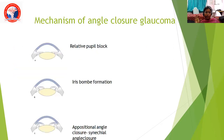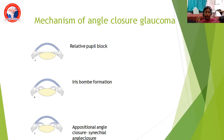This picture shows the mechanism of angle closure glaucoma with relative pupillary block. Once the iris is attached and stuck to the lens, it causes iris bombé formation, which leads to positional angle closure or synechial angle closure. This iris bombé formation causes rise in pressure, the angle closes, and IOP changes happen, leading to symptoms.